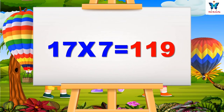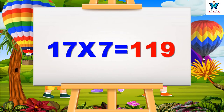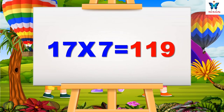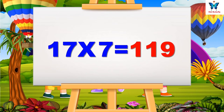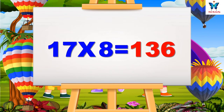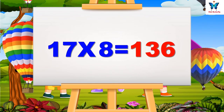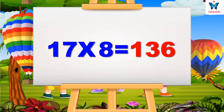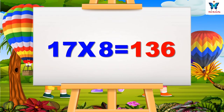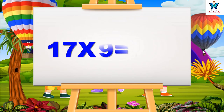Seventeen sevens are one hundred and nineteen. Seventeen eights are one hundred and thirty-six.